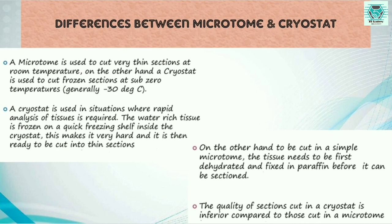What is the difference between a microtome and a cryostat? A microtome is used to cut very thin sections at room temperature, whereas a cryostat is used to cut frozen sections at sub-zero temperature. A cryostat is used in situations where rapid analysis of tissues is required. The water-rich tissue is frozen on a quick freezing shelf inside the cryostat, making it very hard and ready to be cut. In a simple microtome, the tissue needs to be first dehydrated and then fixed in paraffin before it can be sectioned. The quality of sections cut in a cryostat is inferior compared to those cut in a microtome.